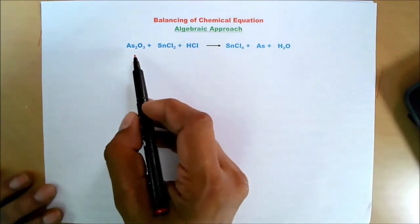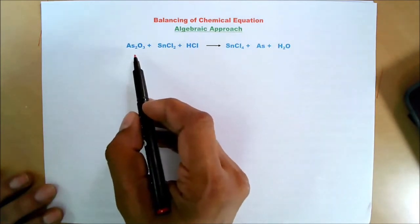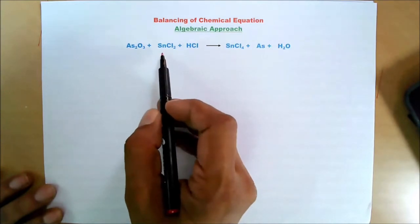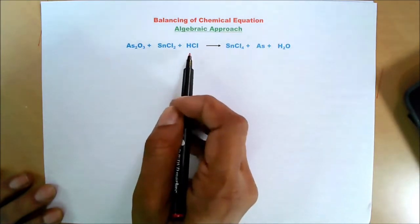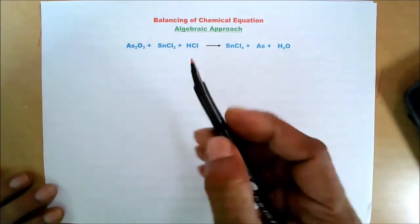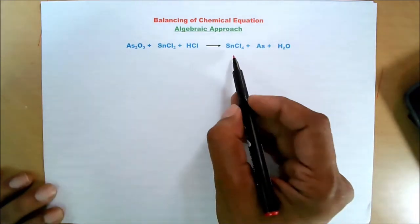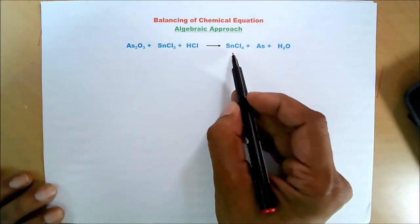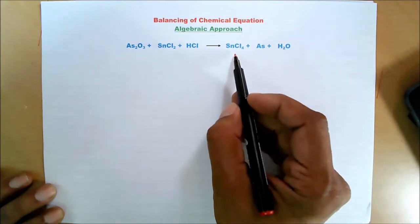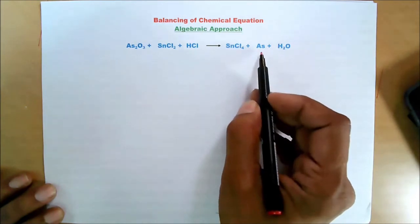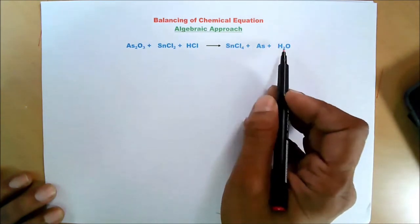Arsenic trioxide reacts with stannous chloride in the presence of hydrochloric acid to produce stannic chloride, elemental arsenic, and water.